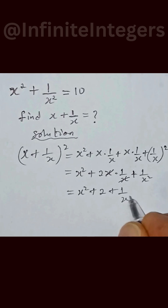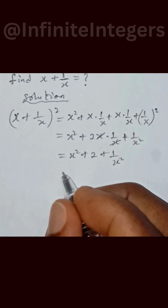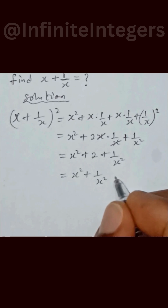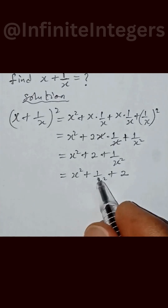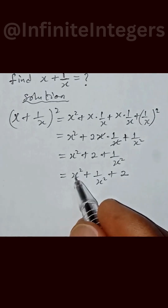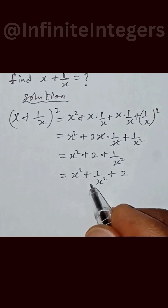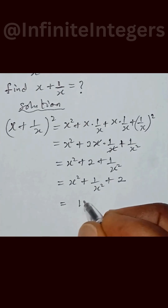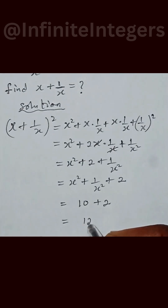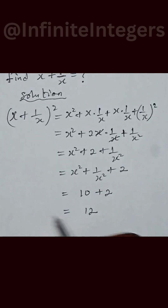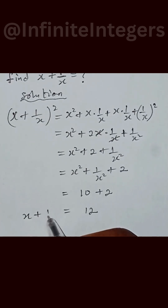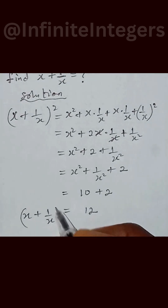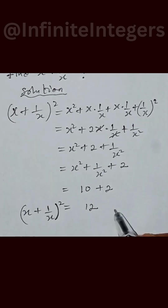We can rearrange this as x squared plus 1 over x squared plus 2. Now, x squared plus 1 over x squared was given as 10 earlier, so we replace that with 10. We have 10 plus 2, which equals 12. This 12 is equal to x plus 1 over x, all squared.